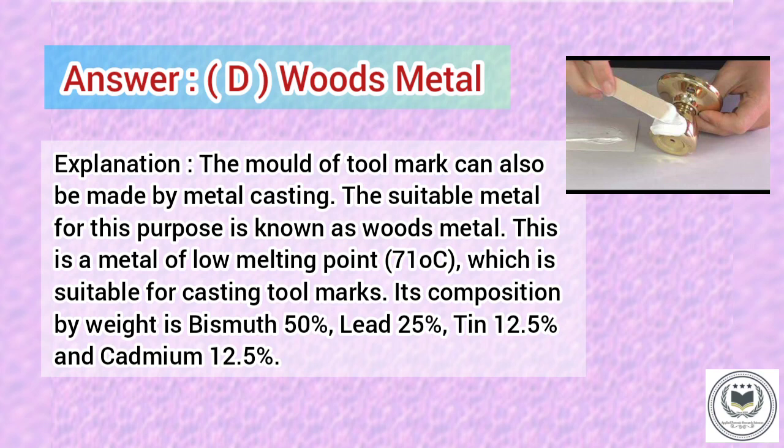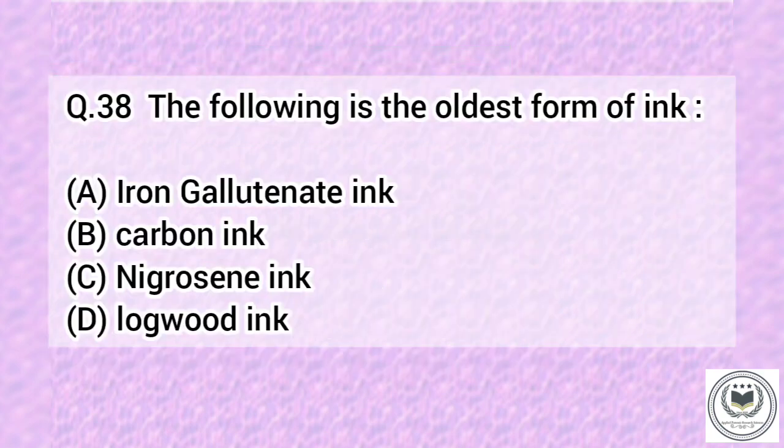The mould of a tool mark can also be made by metal casting. The suitable metal for this purpose is known as Woods metal. This is a metal of low melting point which is suitable for casting tool marks. Its composition by weight is bismuth 50%, lead 25%, tin 12.5%, and cadmium 12.5%.